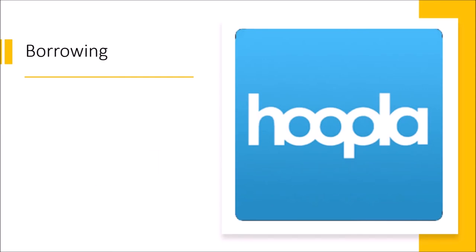Hoopla's borrowing rules are very different from the other e-content lending services. There are no wait times — anything you want can be checked out instantly. However, there is a trade-off: Hoopla only allows a limited number of checkouts per month. At the moment, it is 6 items per month per card. Hoopla, for the duration of the coronavirus pandemic shutdowns, has also made a number of items available to check out for free without counting against your checkout numbers. Other than that, the 6 items per month is a hard limit.